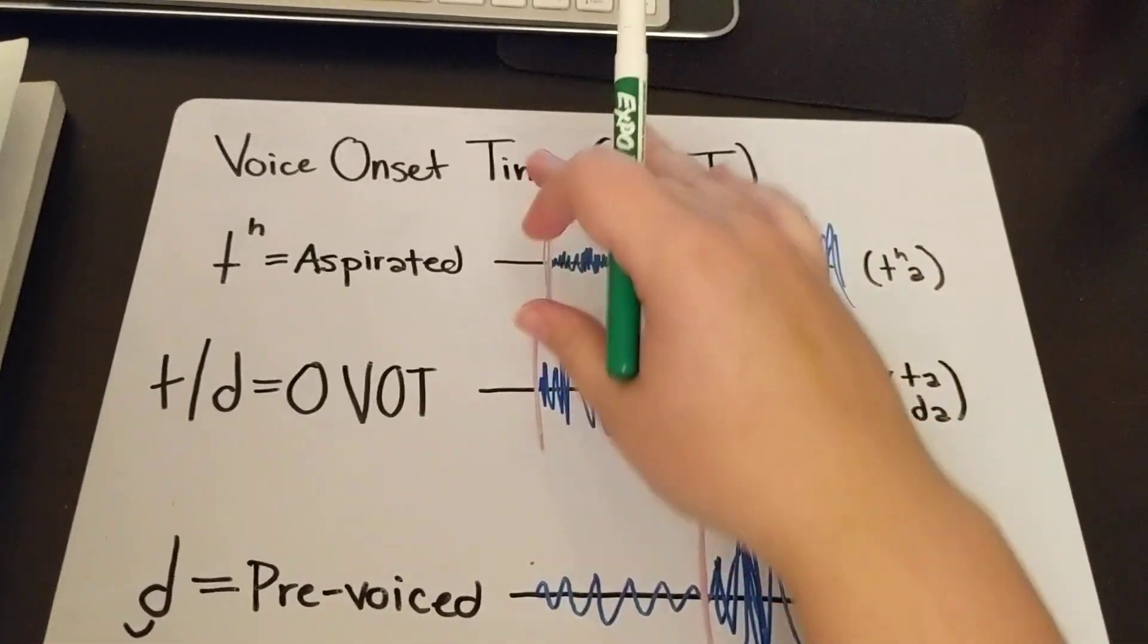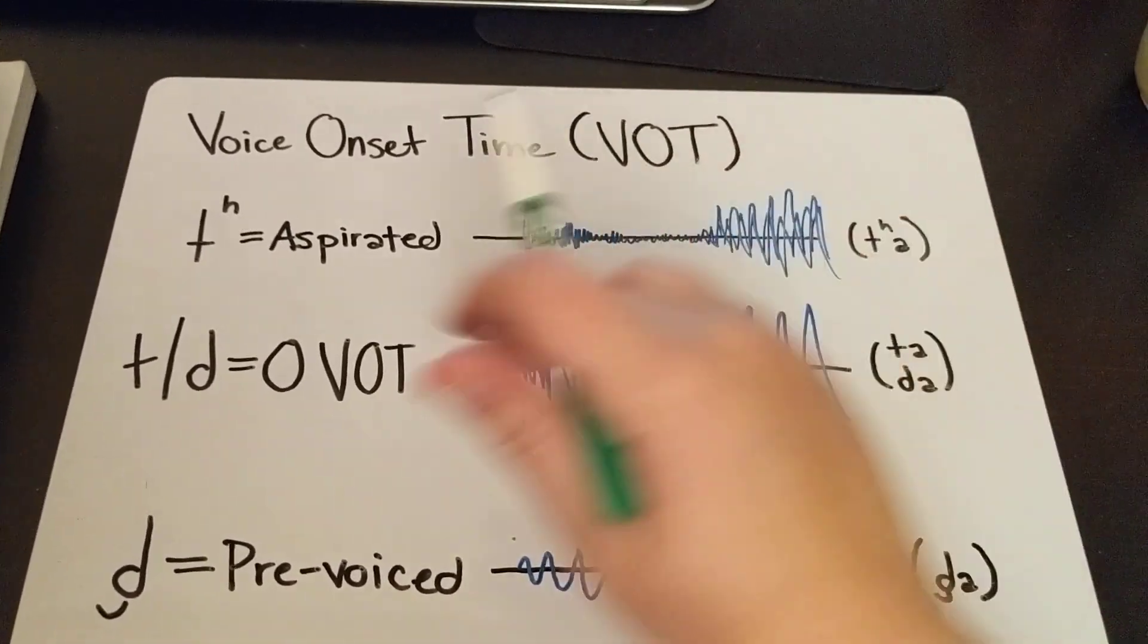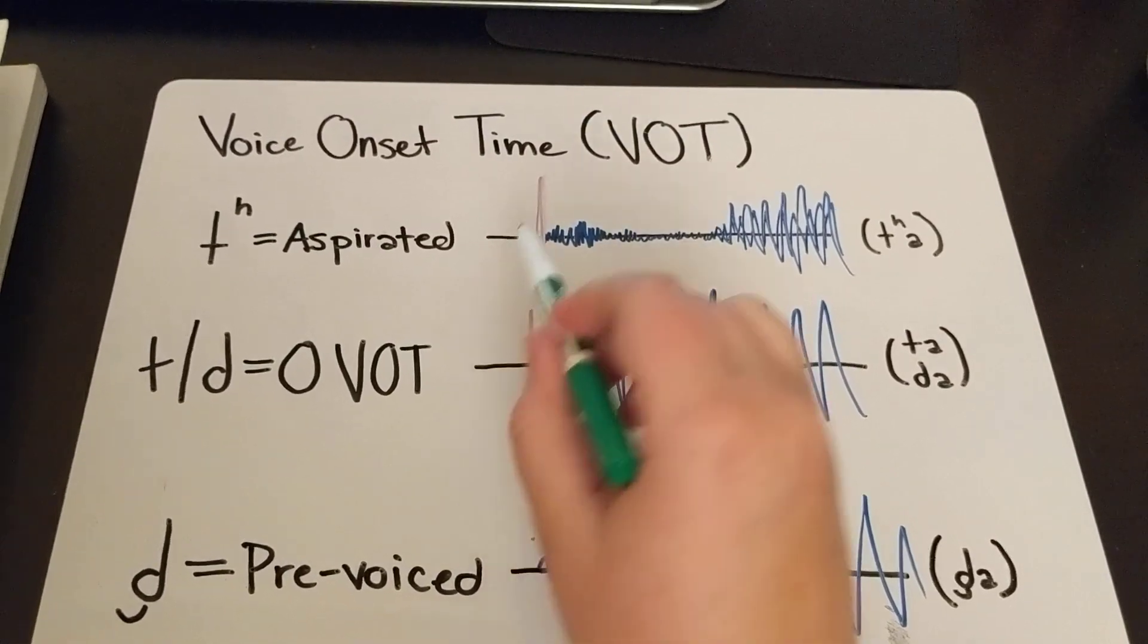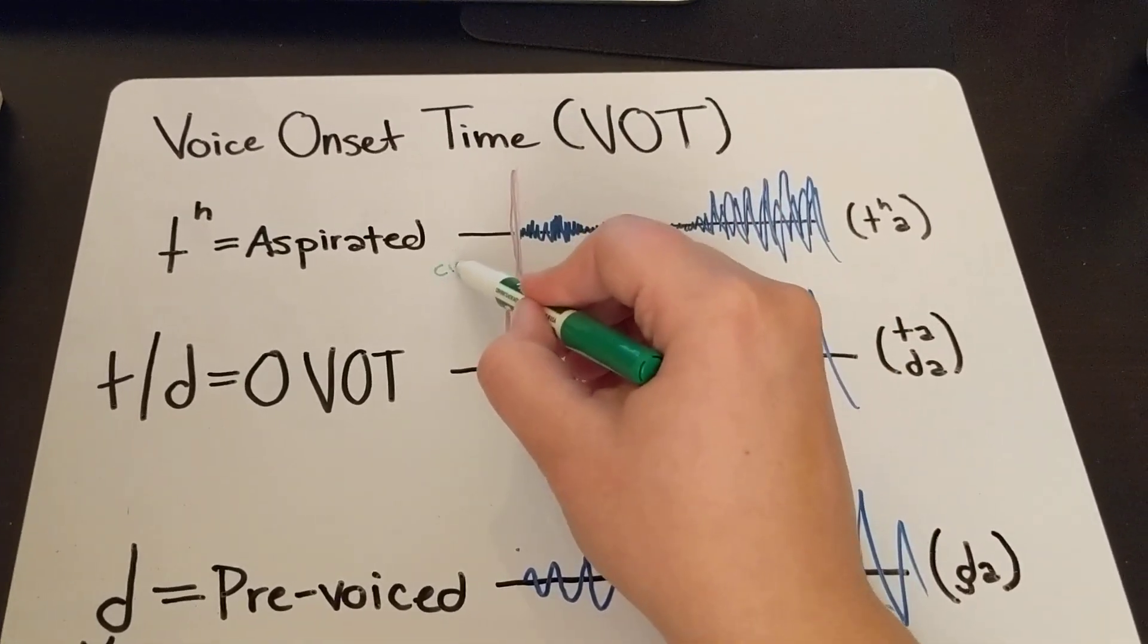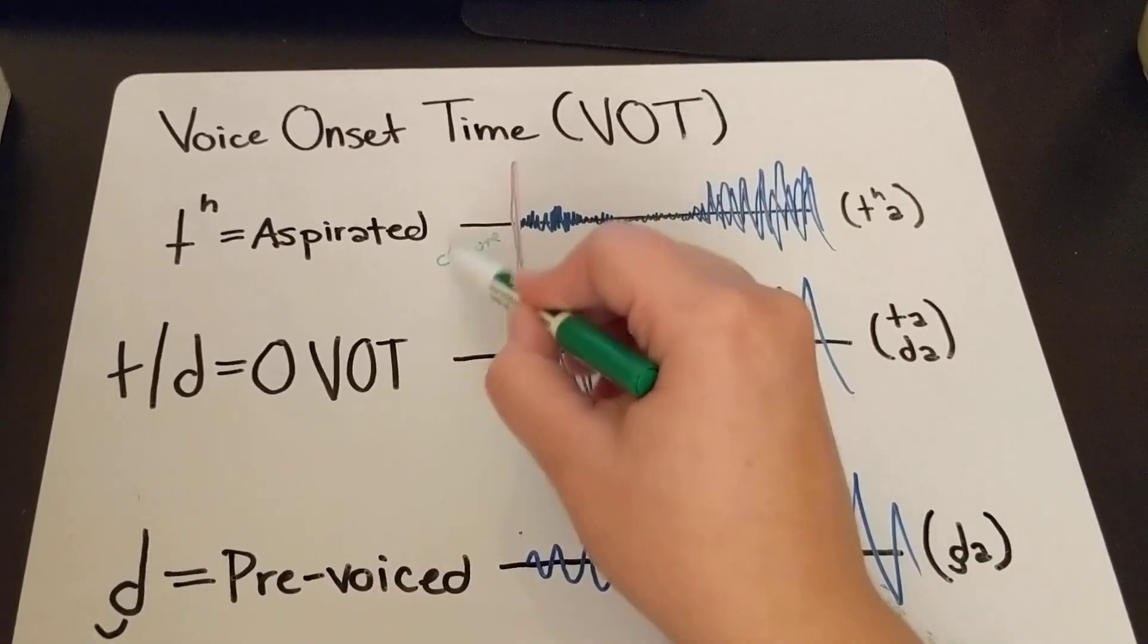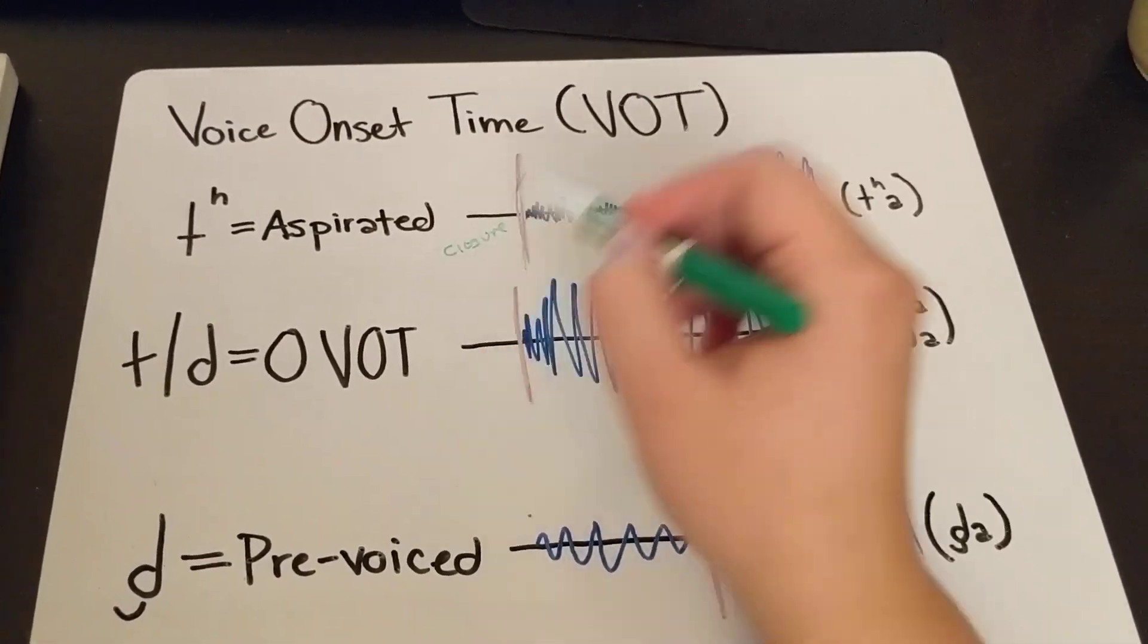So if you're thinking of this as the acoustic signal, you have this period of silence. So this is the closure. This is while you have no sound, no air flowing through.